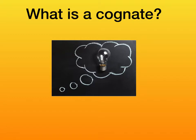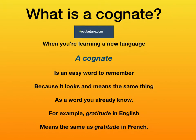What is a cognate? When you're learning a new language, a cognate is an easy word to remember because it looks and means the same thing as a word you already know. For example, gratitude in English means the same as gratitude in French.